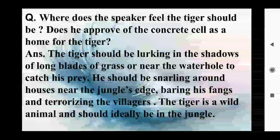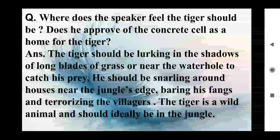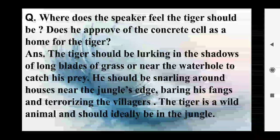Question: Where does the speaker feel the tiger should be? Does he approve of the concrete cell as a home for the tiger? Answer: The tiger should be lurking in the shadows of long blades of grass or near the water hole to catch his prey. He should be snarling around houses near the jungle's edge, baring his fangs and terrorizing the villagers. The tiger is a wild animal and should ideally be in the jungle.